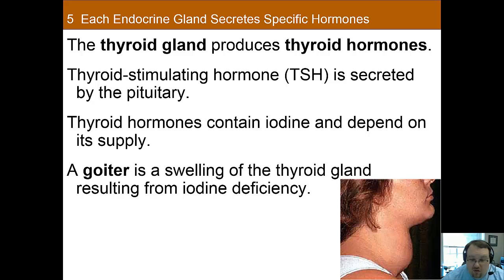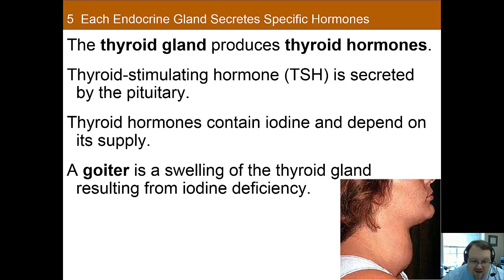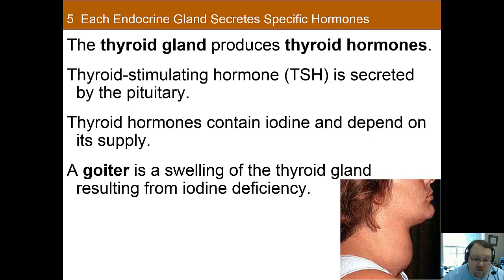Thyroid hormones are amine hormones but are an exception to the rule because they act much like steroid hormones in that they regulate gene expression. All thyroid hormones contain iodine and are reliant on iodine supply. A diet lacking in iodine can lead to health problems including a goiter — a swelling of the thyroid gland due to iodine deficiency. Iodine deficiency affects an estimated 2 billion people worldwide and is one of the leading causes of intellectual disability when it occurs during development. This is why iodine is added to table salt — iodized salt — to help ensure people don't develop iodine deficiencies.